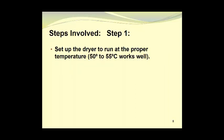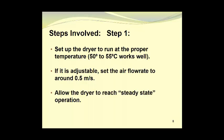In the first step, we will set up the dryer to run at the proper temperature. 50 degrees to 55 degrees Celsius works very well. If it is adjustable, set the air flow rate on the dryer to around 0.5 meters per second. You should allow the dryer to reach steady state operation before going any further.